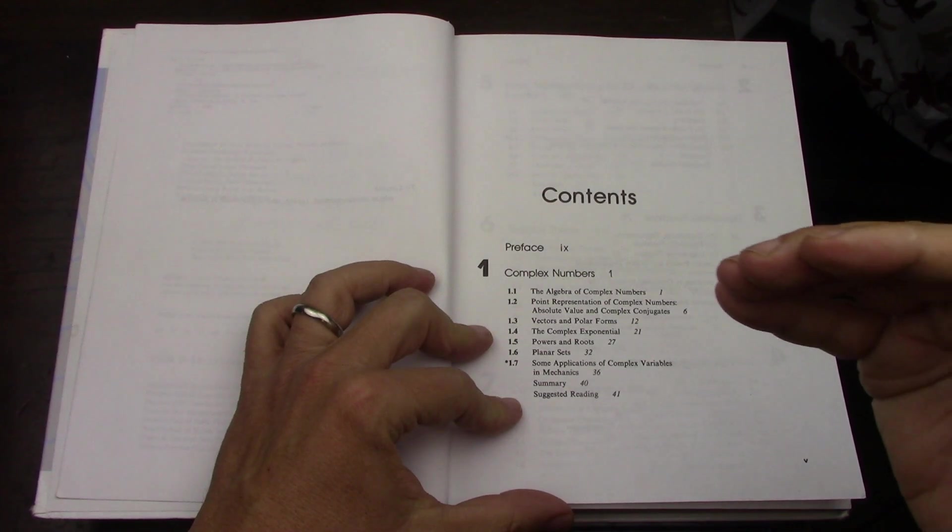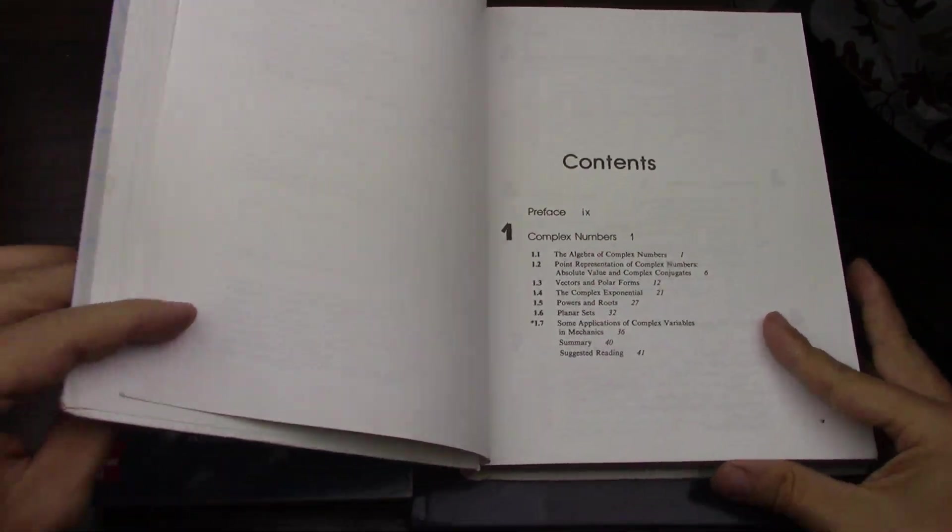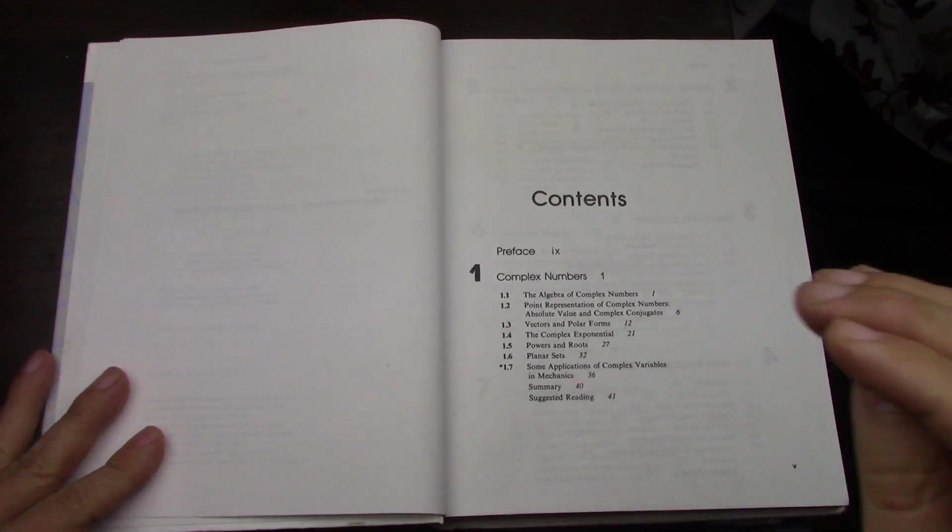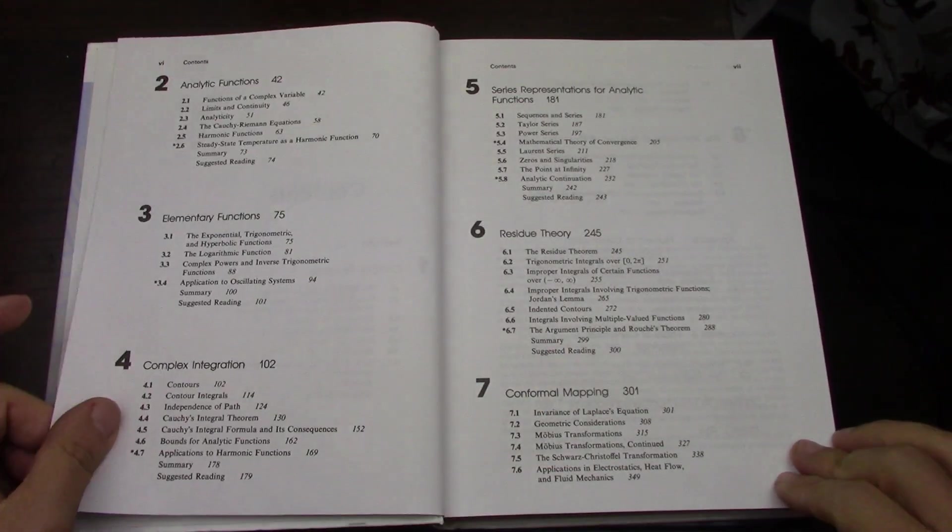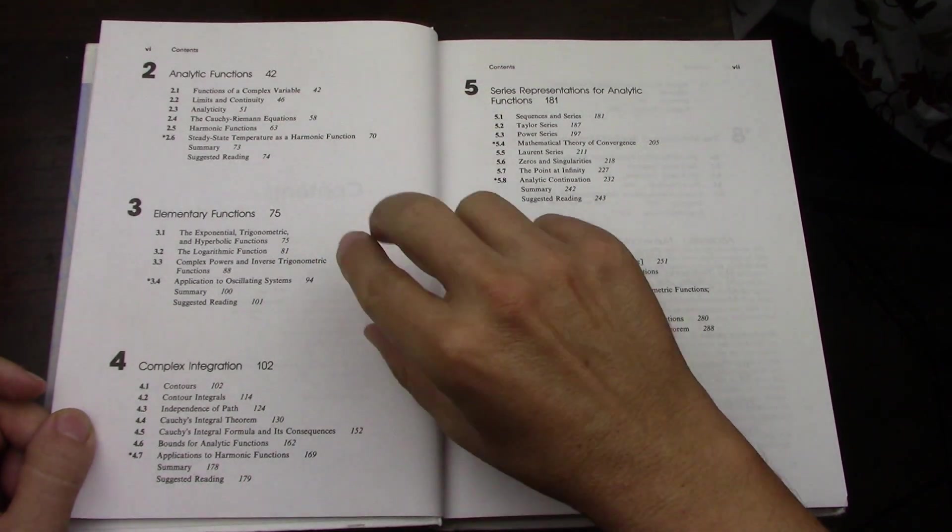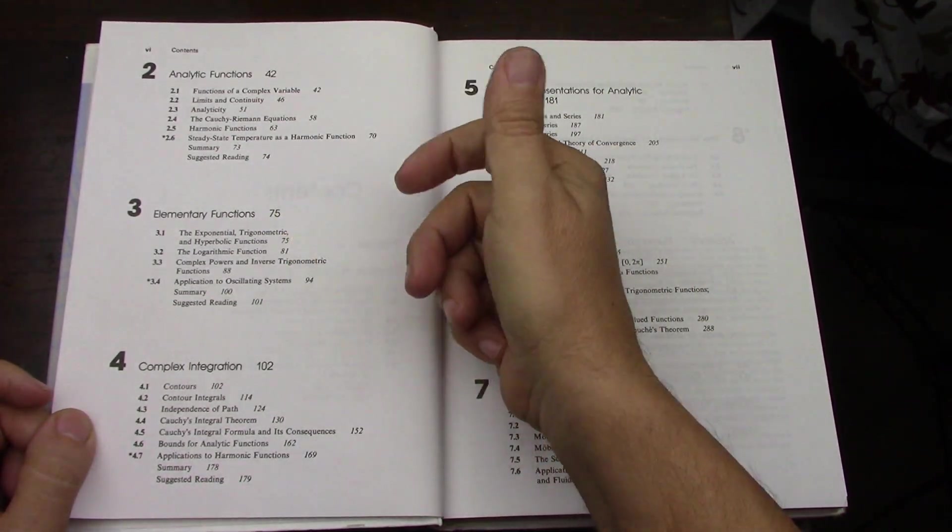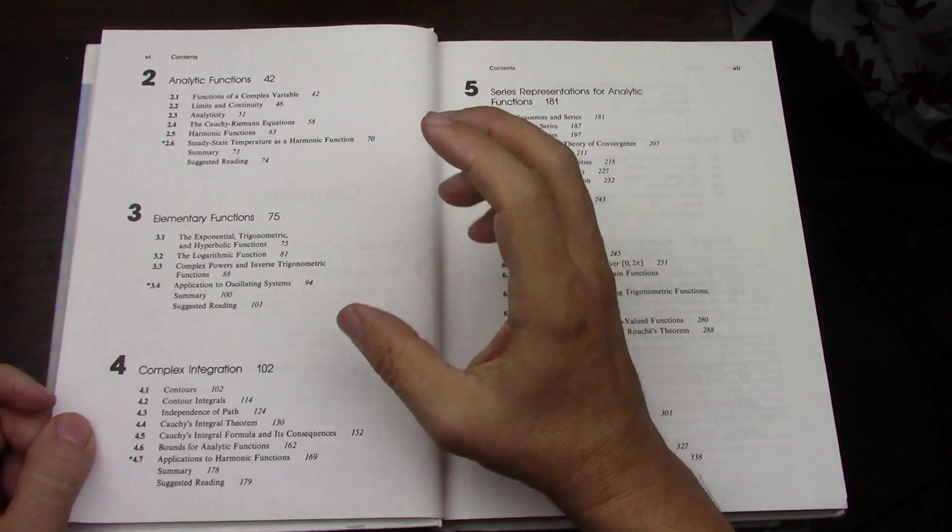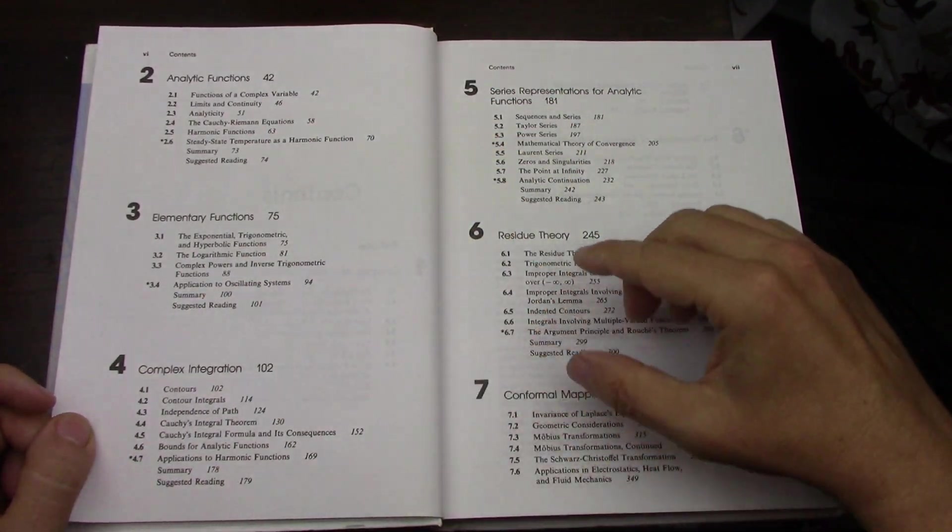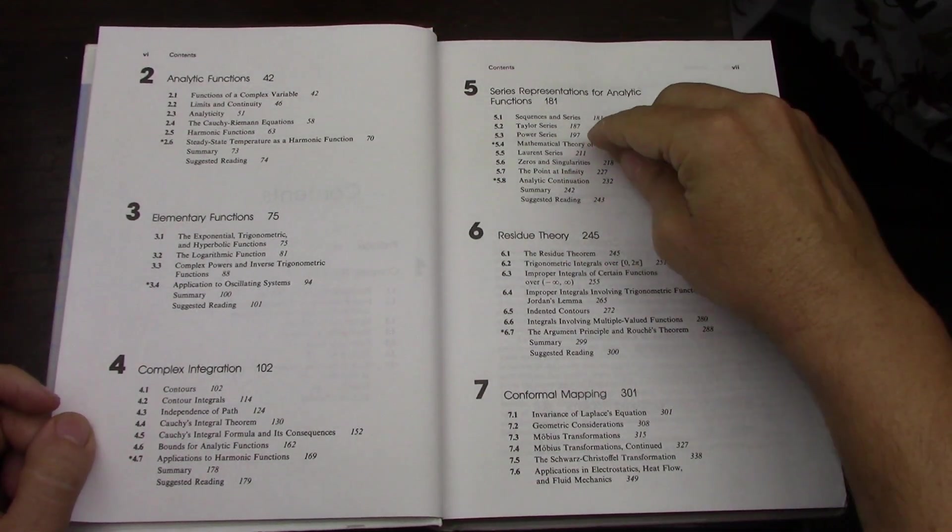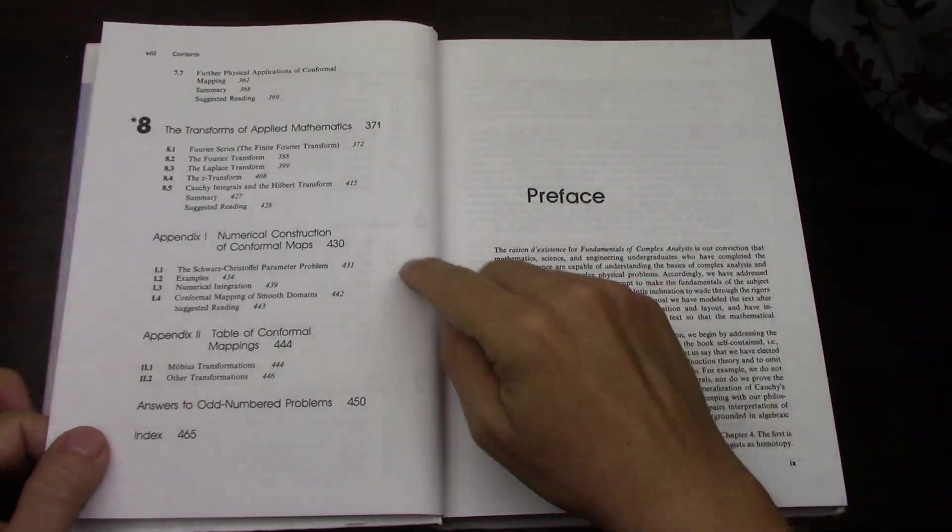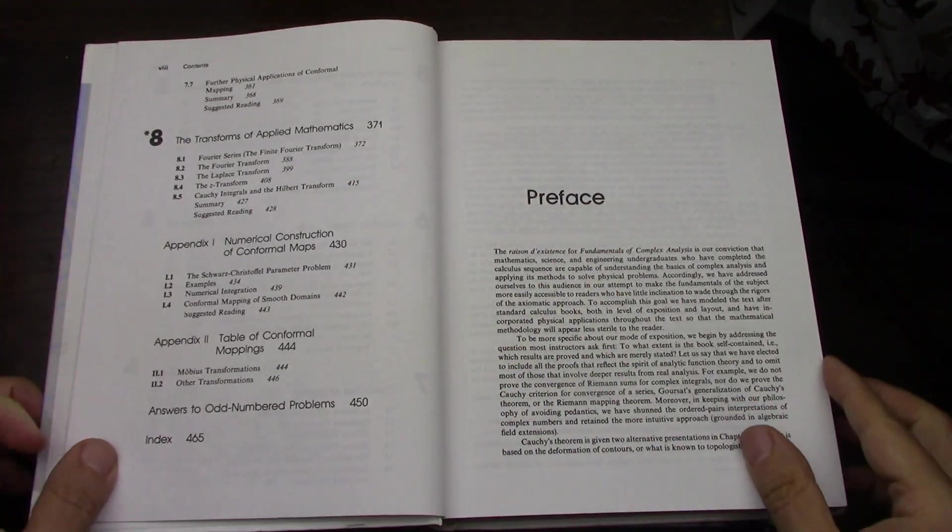These books—actually all four books—follow a very similar pattern. They talk about complex numbers, analytic functions, then elementary functions, especially the whole thing about branch cuts and branch points, which I found very interesting and very difficult. Then complex integration, series, residues, conformal mapping, and in the case of Saff and Snyder, he does transforms.